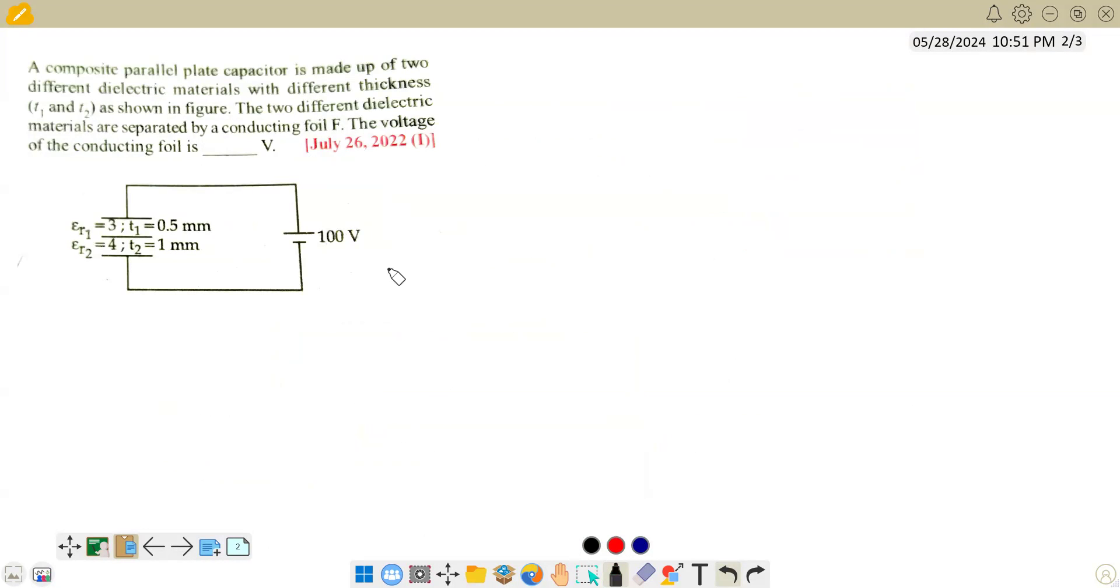I have taken a smaller version of this diagram. Let me call this upper plate as C1 and lower plate as C2. Let A be the area of these plates. So, we can write C1 equals K epsilon naught A by D. K is nothing but a dielectric constant. So, C1 equals 3 epsilon naught. Let A be the area of the plate divided by t1 is 0.5.